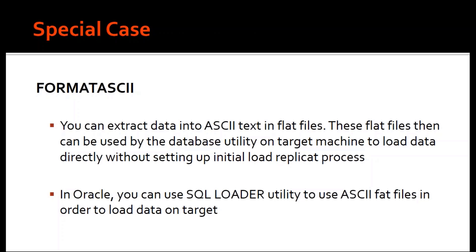You can actually extract the data directly into flat files or CSV files using Golden Gate. You can use the keyword FORMAT ASCII to extract data into ASCII text files. These flat files can then be used by the database utility on the target machine to load data directly, without setting up an initial load replicate process.